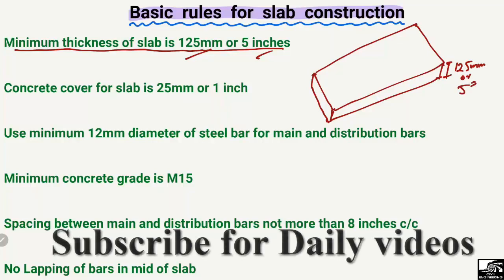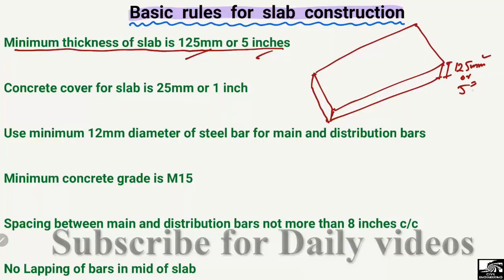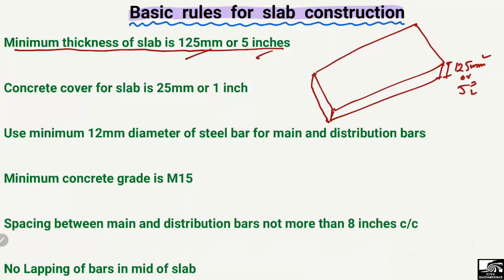This is the minimum thickness of your slab — you should not take the thickness of the slab less than 125 mm or 5 inches. For example, you cannot design your slab with 4 inches thickness; it's not possible. So the first basic rule is that the minimum thickness of the slab is 125 mm or 5 inches.